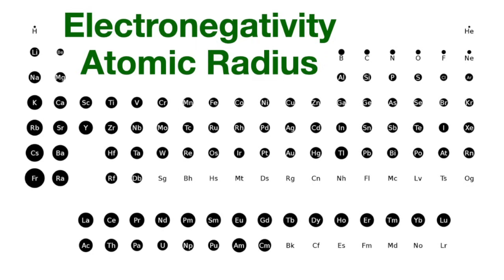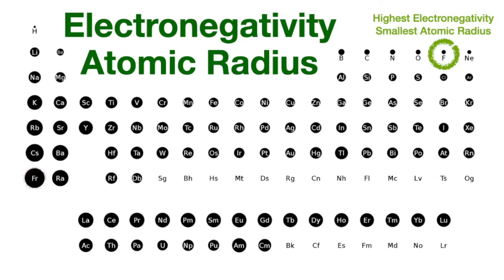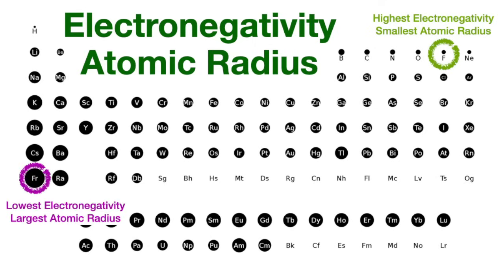But we don't actually have to calculate electronegativity difference. Simply know that as atoms get closer to the top right corner of the periodic table, they have higher electronegativity and smaller atomic radii. As atoms get closer to the bottom left corner of the periodic table, they have lower electronegativity and larger atomic radii.